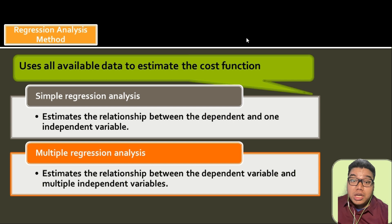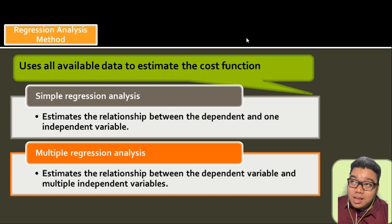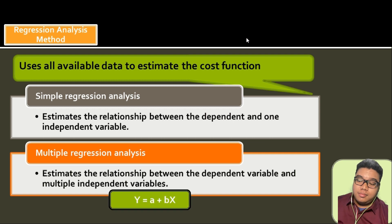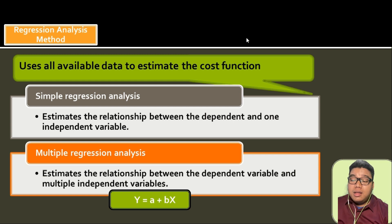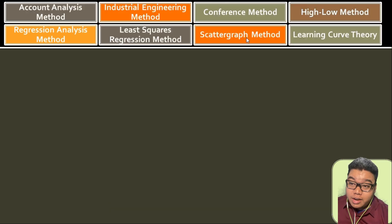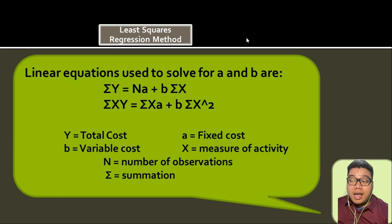Regression analysis eliminates the disadvantage of the High-Low Method; however, it requires detailed calculation to arrive at the fixed and variable components. We use the formula Y = A + BX — the slope-intercept formula — and the least squares regression method to derive those components.